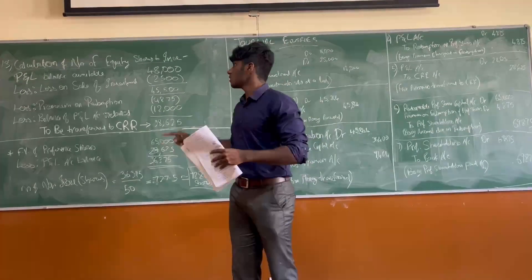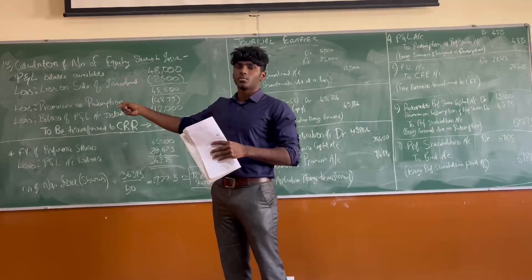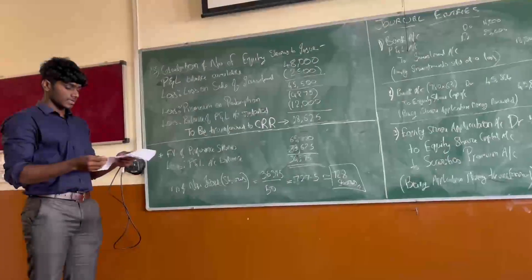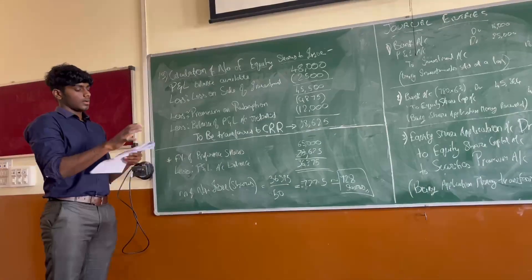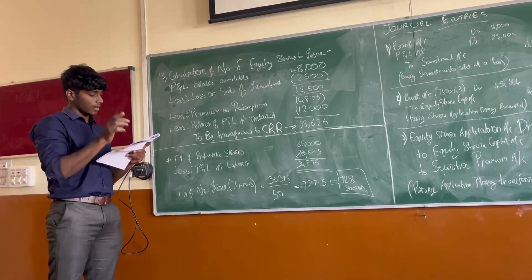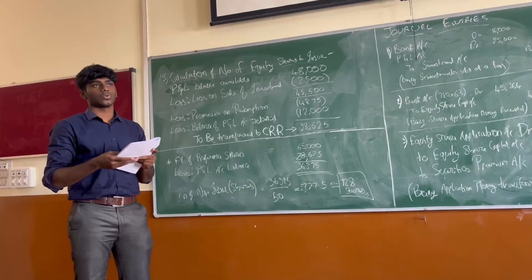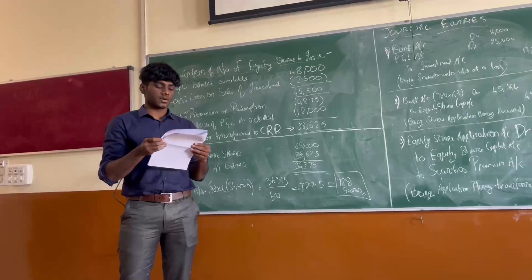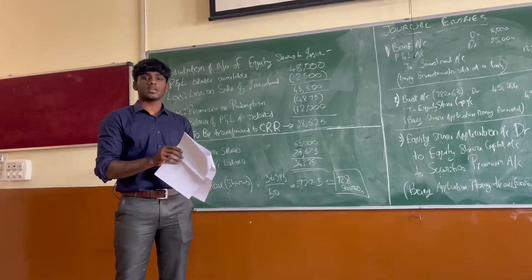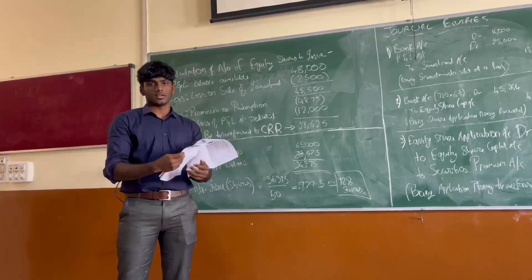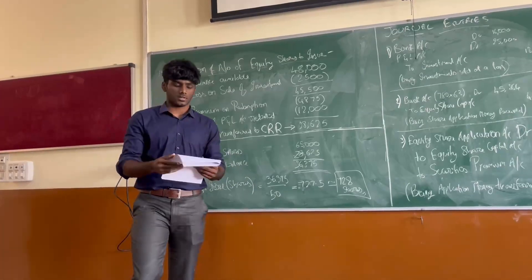Now let's look at the calculation of equity shares — this is the 13th sum of the model. The first sub-question asks us to sell all investments for 16,000. The value of investments is 18,500, so when sold for 16,000 there is a loss of 2,500, which would be deducted from the Profit and Loss account.